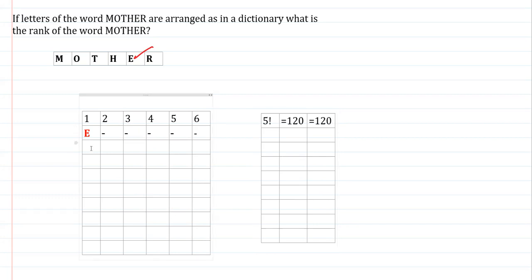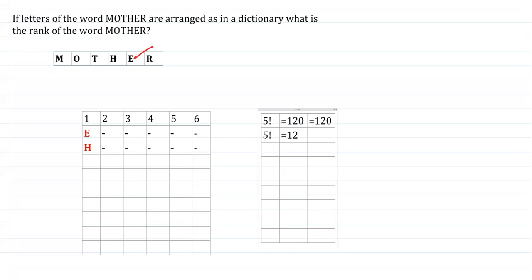Once all words beginning with E are exhausted, alphabetically the next turn is for H. Again we have five slots, which can be arranged in 5! = 120 ways. So 120 plus 120 gives 240 — by the time all words starting with H are exhausted, 240 words will have been written.